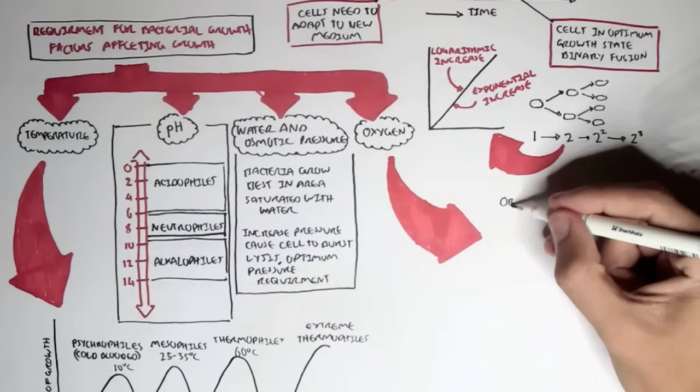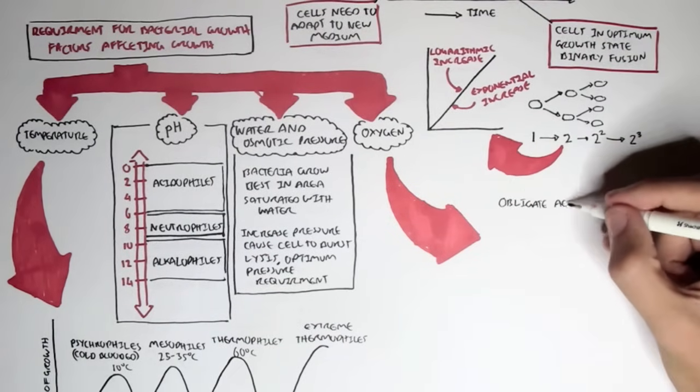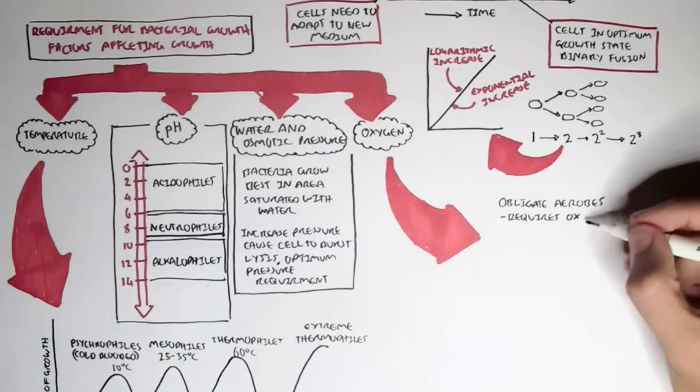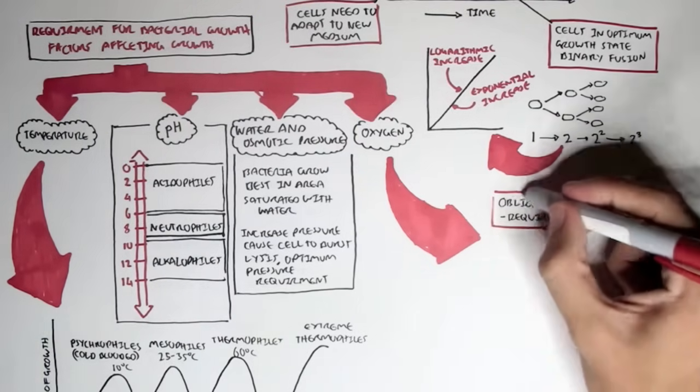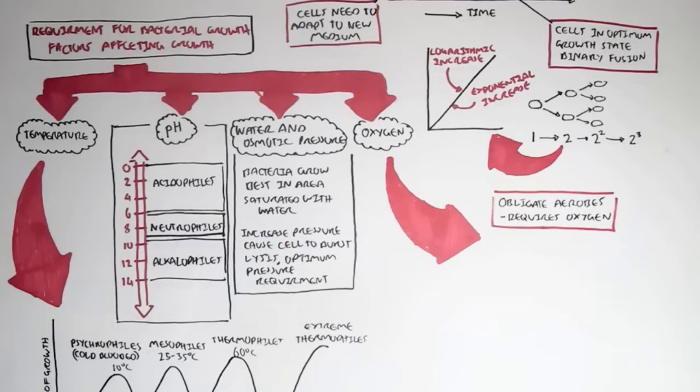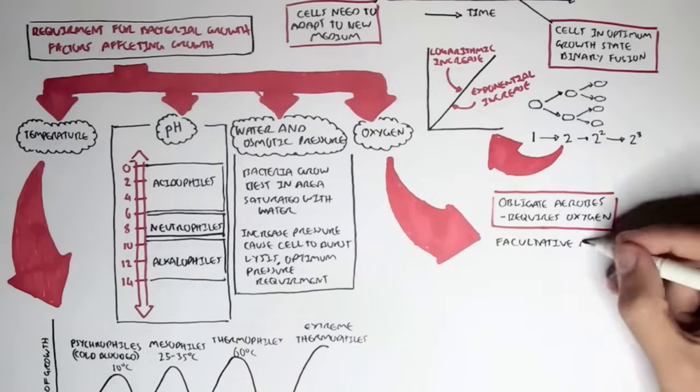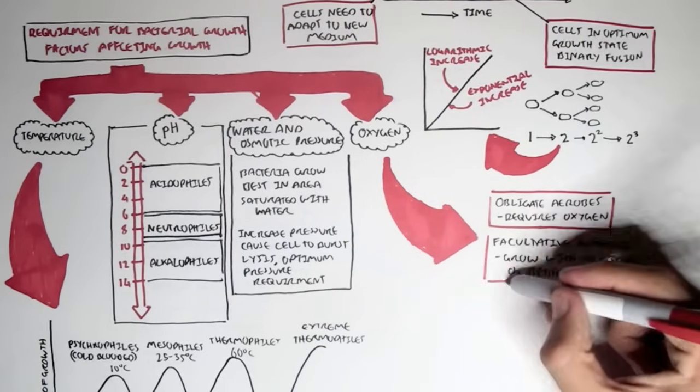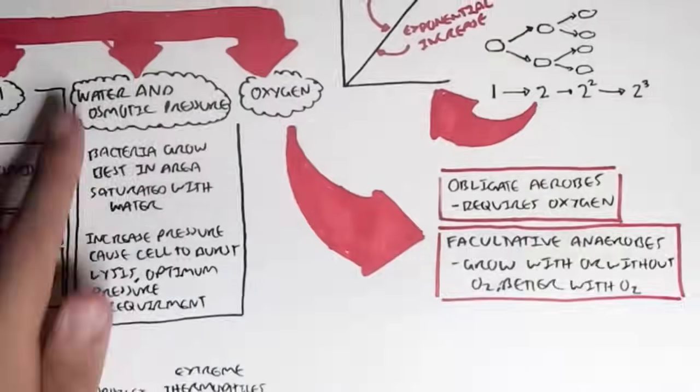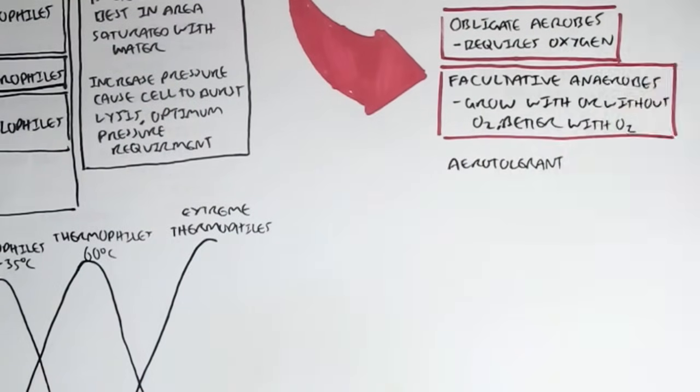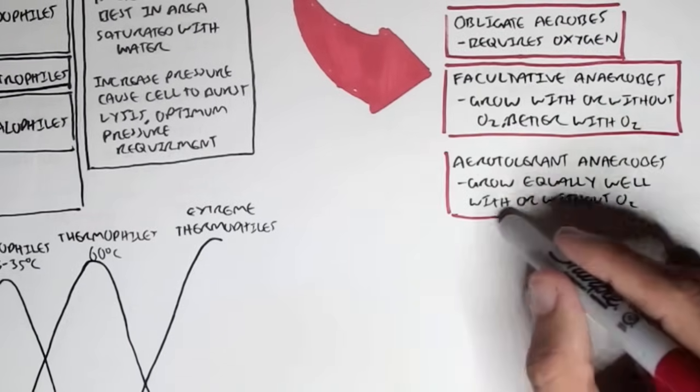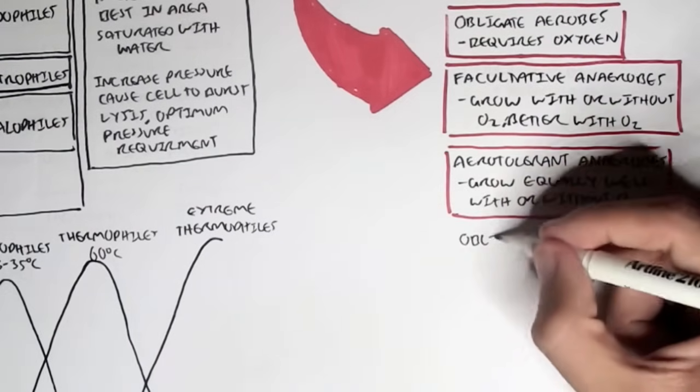Oxygen is another factor which greatly influences bacterial growth. Bacteria can be either anaerobic or aerobic, or in between. Let's look at some classifications of bacteria with oxygen. First, we have obligate aerobes, which are types of bacteria which require oxygen to survive. Then we have facultative anaerobes, which grow with or without oxygen, but they grow better with oxygen. Then we have aerotolerant anaerobes, which grow equally well with or without oxygen. Obligate anaerobes are bacterial cells which die in the presence of oxygen.